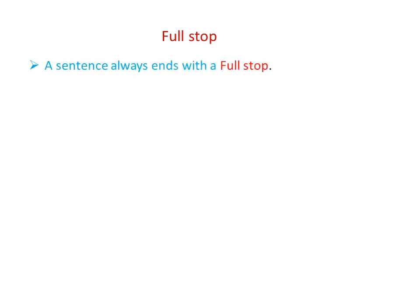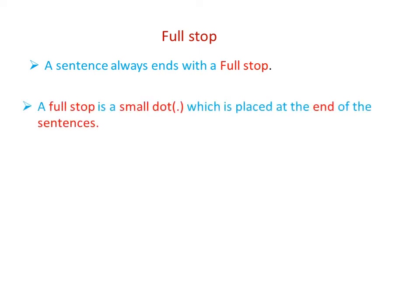Now let us move to the second rule that we must follow while writing sentences. Full stop. A sentence always ends with a full stop. A full stop is a small dot which is placed at the end of the sentence.